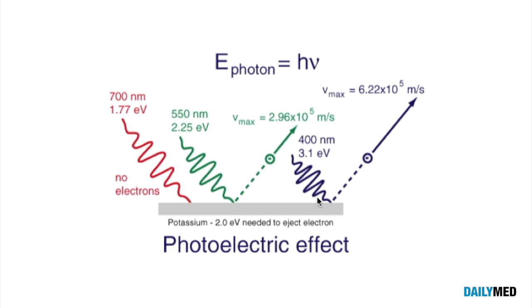and then we see that we shine the photon to the plate. We overcome the binding energy, and then the electron is ejected. And we have a Vmax that's much higher than the one with the green light photon.